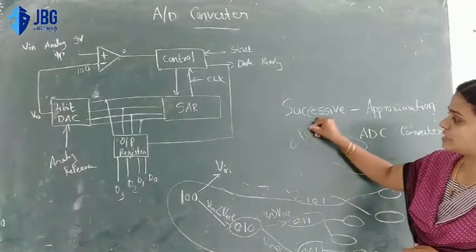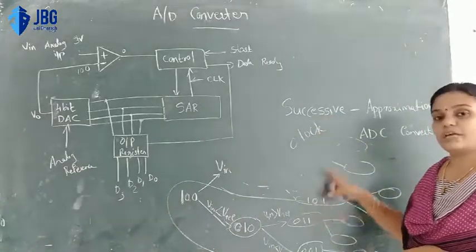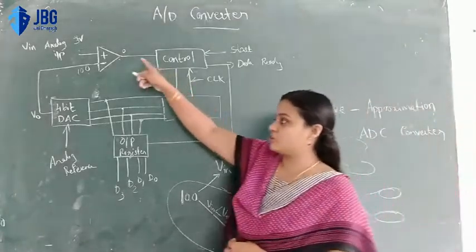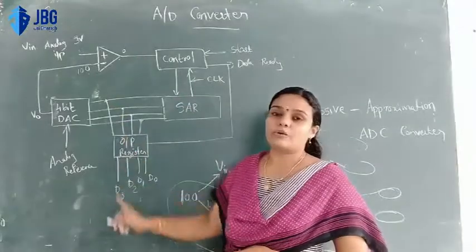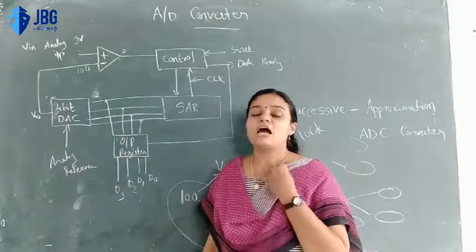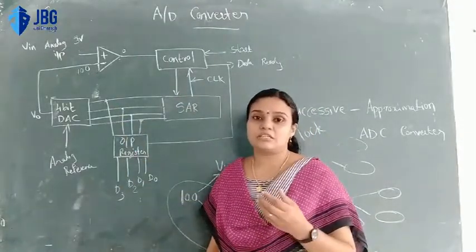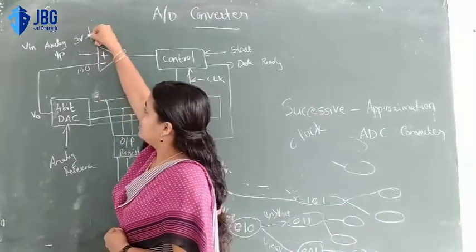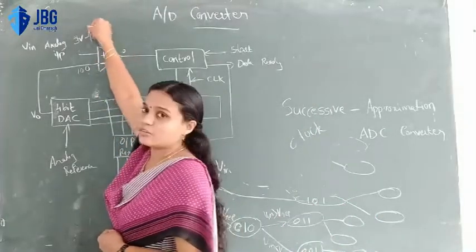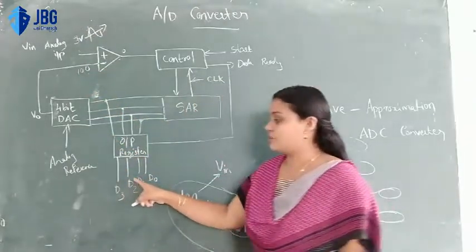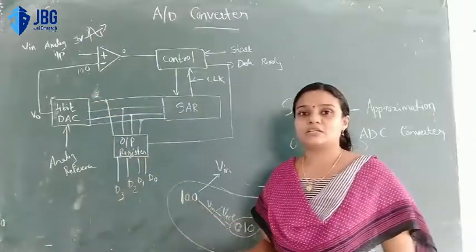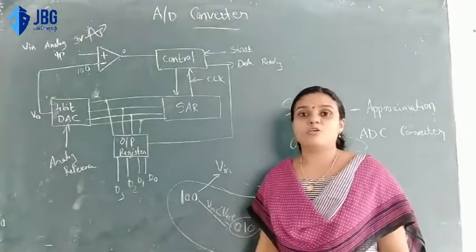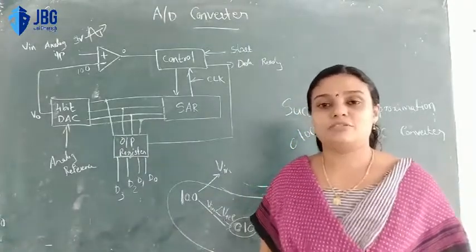The output register will be added to the digital output. The input is a 3-word IC signal. The digital output will be added through this approximation register. This is the successive approximation register — the analog to digital converter. Thank you.